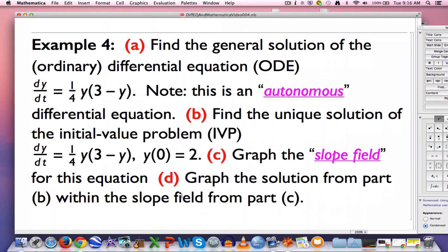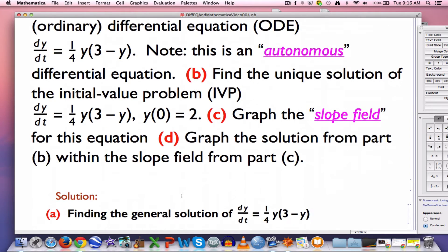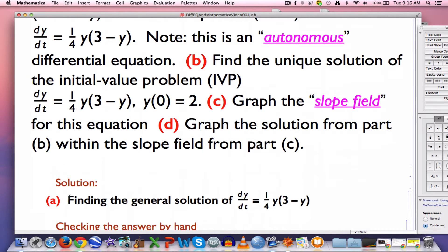Here's the example. You can pause the video right now and look this over. I'm going to go ahead and move on down to part A, the solution in part A. We want to find the general solution of this differential equation: dy/dt equals 1/4 y times the quantity 3 minus y.